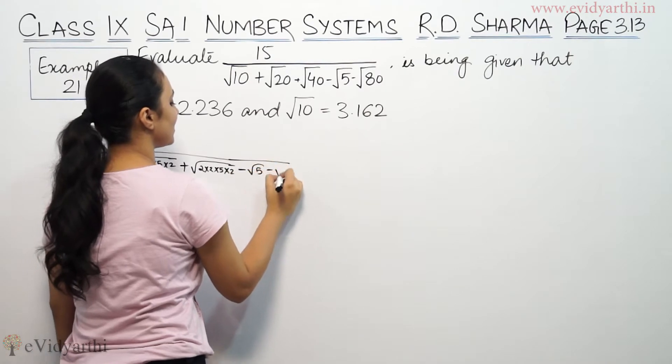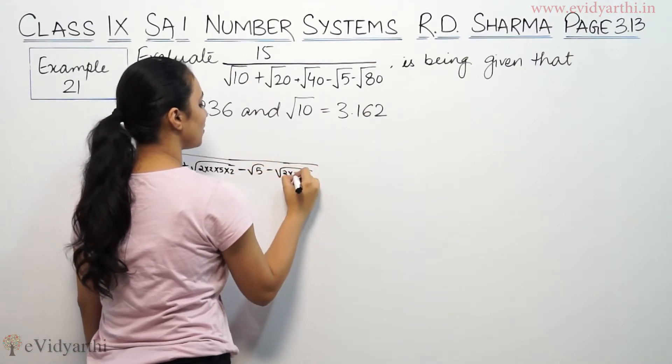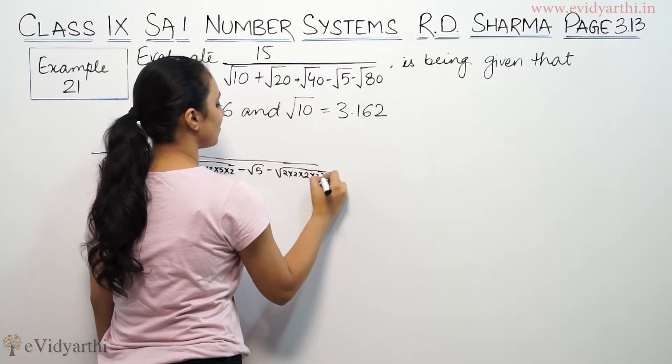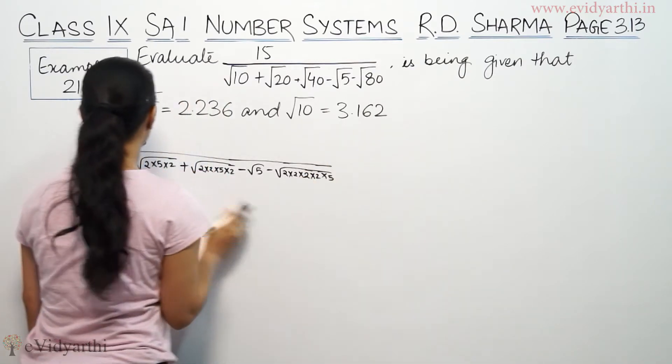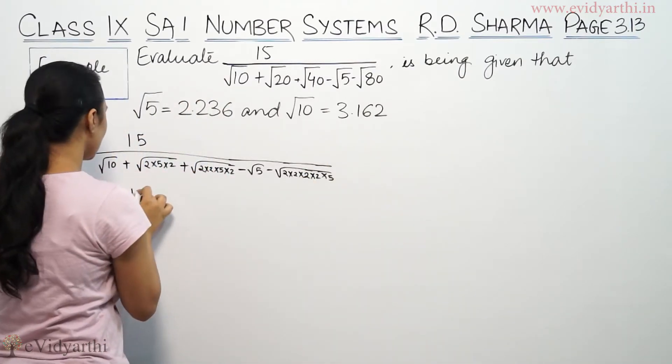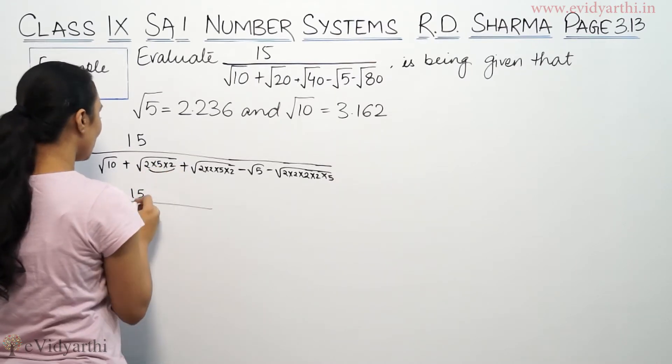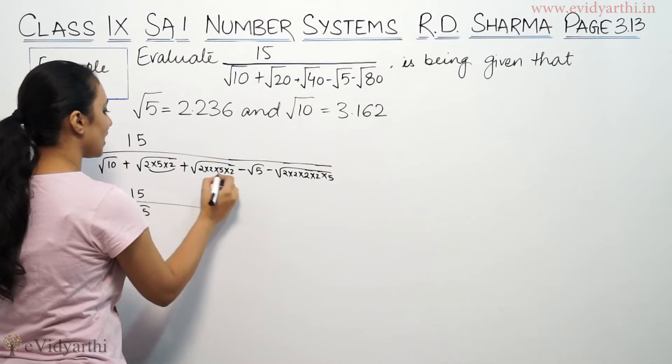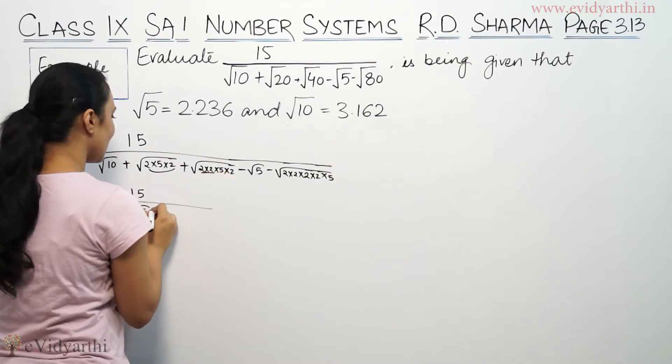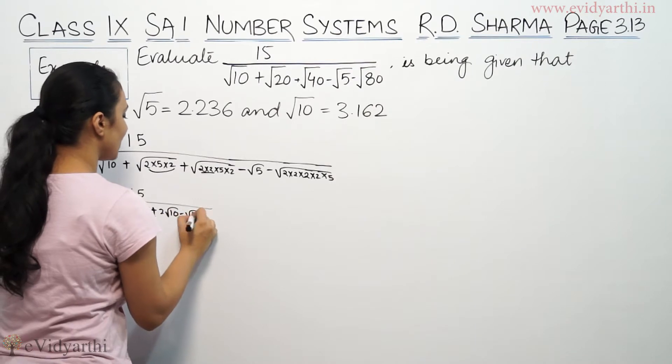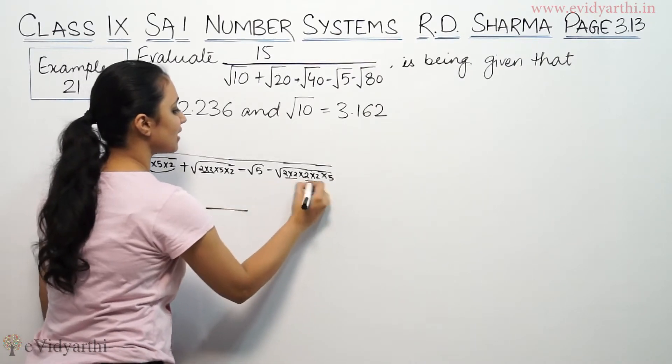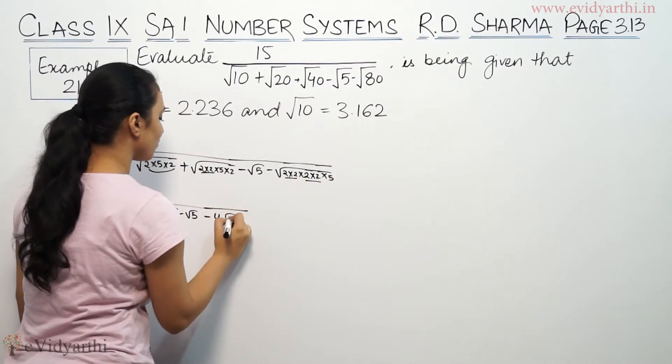Minus root 5 as it is, and this is 2 to the 4, 4 times 8, 2 is 16, times 5 is 80. So this gives us 15 by root 10 plus, from here taking out 2 common, 2 root 5, and here taking 2 common, this is 2 root 10 minus root 5 minus 4 root 5.